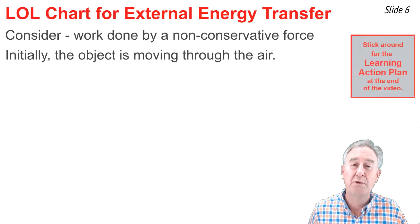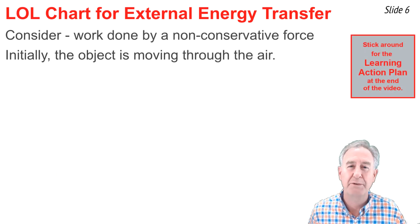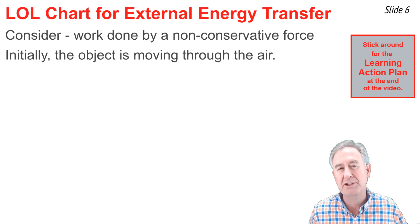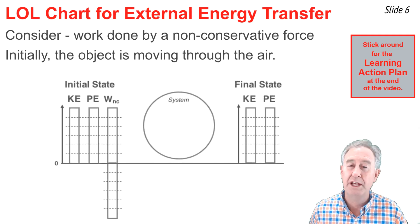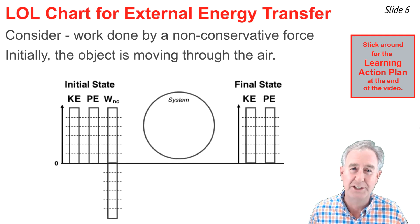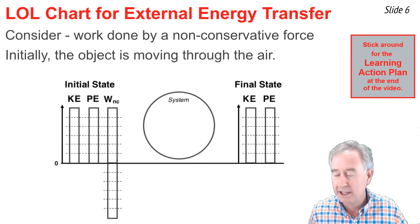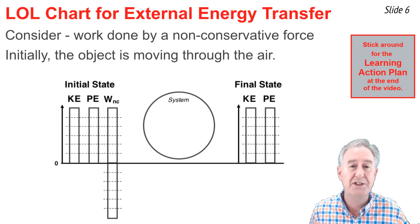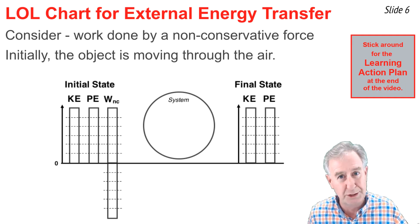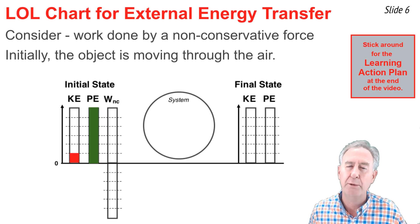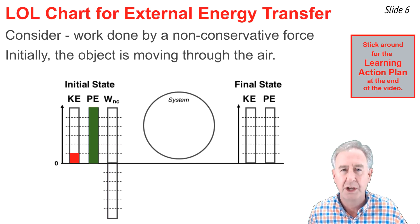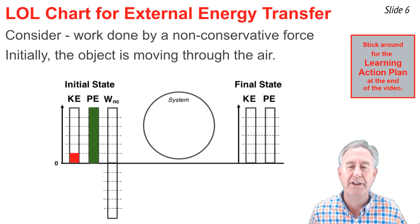So now let's consider negative work being done by this non-conservative force upon the system. And we'll say that the system or the object is initially moving through the air. Let's do the LOL chart and energy analysis. Because the object's moving, it initially starts with kinetic energy and it's in the air, so it has potential energy being above the ground. So I'm going to show that on my bar chart. I'm making arbitrary heights up for these bars, one plus six is what I have. That totals seven.